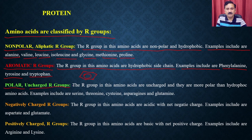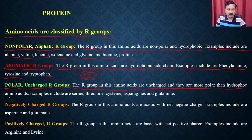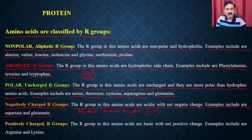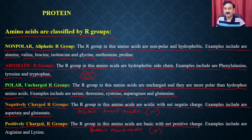Polar uncharged R groups are not positive or negative but are polar in nature; examples include serine, threonine, cysteine, asparagine, and glutamine. Negatively charged R groups are called acidic amino acids because they impart negative charge to the protein; examples are aspartate and glutamate. Positively charged R groups are called basic amino acids, giving positive charges; examples include arginine and lysine.